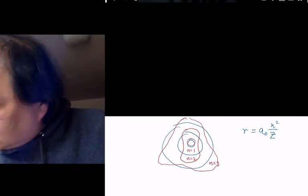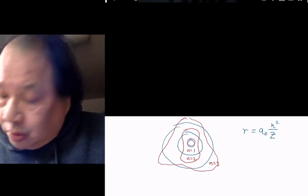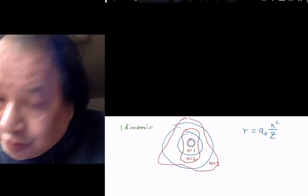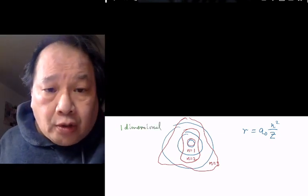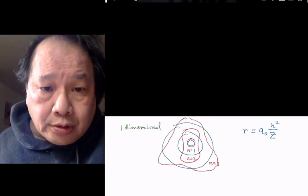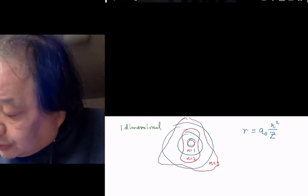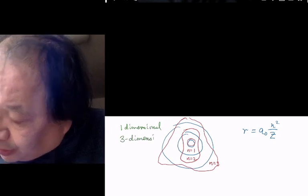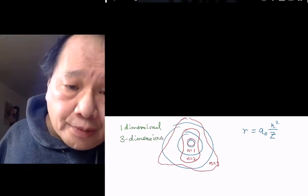The problem with these waves is they are all one-dimensional. They are the values of the wave as I go in the one-dimensional circle. And we live in three dimensions. Our waves, our real waves, are three-dimensional.